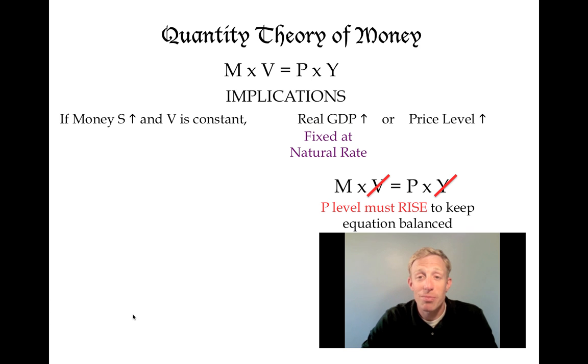When the price level goes up, we have inflation. So the first implication of the quantity theory of money is that by printing money, the Fed is responsible for causing inflation.